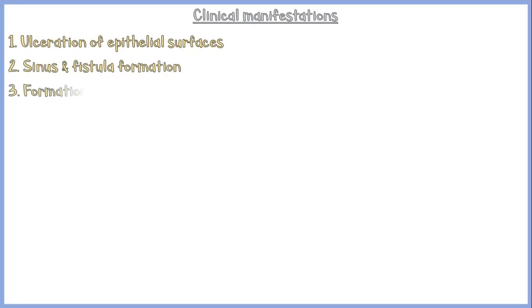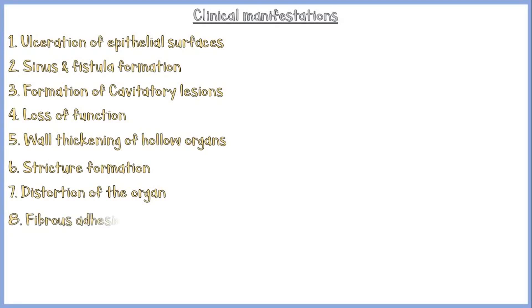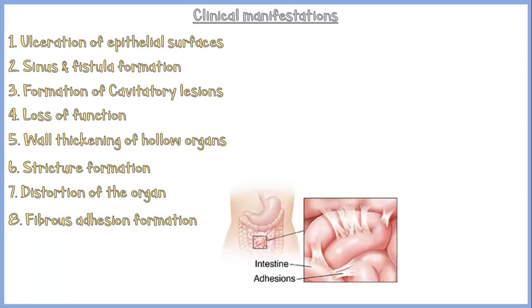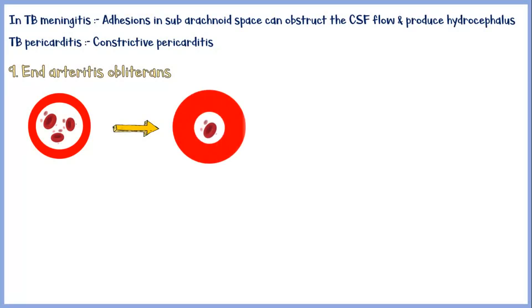Finally, let's see some common clinical manifestations caused by chronic inflammation. These include ulceration of epithelial surfaces, sinus and fistulae formation, cavitatory lesion formation, loss of function, wall thickening of hollow organs, stricture formation, distortion of the organ, and fibrous adhesion formation. Fibrous adhesions are formed when two inflammatory surfaces come into contact with each other, commonly seen in the small intestine. In tuberculosis of the meninges, fibrous adhesions in the subarachnoid space can obstruct CSF flow and produce hydrocephalus in children. In tuberculosis of the pericardium, fibrous adhesions may cause constrictive pericarditis. Another less common manifestation is endarteritis obliterans, where small blood vessels within areas of chronic inflammation undergo progressive intimal proliferation, causing narrowing of the lumen, resulting in chronic ischemia and diffuse fibrosis of the affected area.